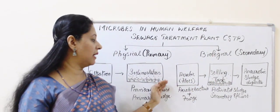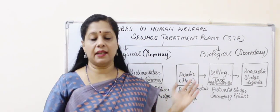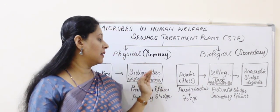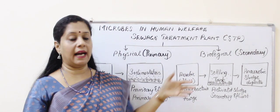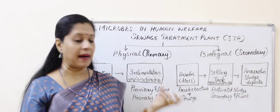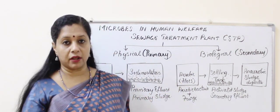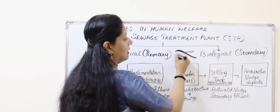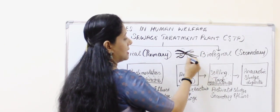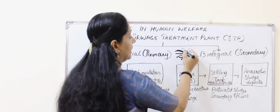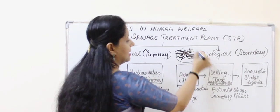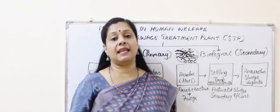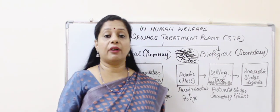Coming to biological treatment: the primary effluent is given to the second stage. Here we add some aerobic bacteria along with some fungi, called a floc. Fungi have a filamentous body called a hypha, and many hyphae entangle to form something called a mycelium. The bacteria get entangled in this mycelium, and this is called a floc. So the floc consists of aerobic bacteria and fungi, and they need a lot of oxygen.